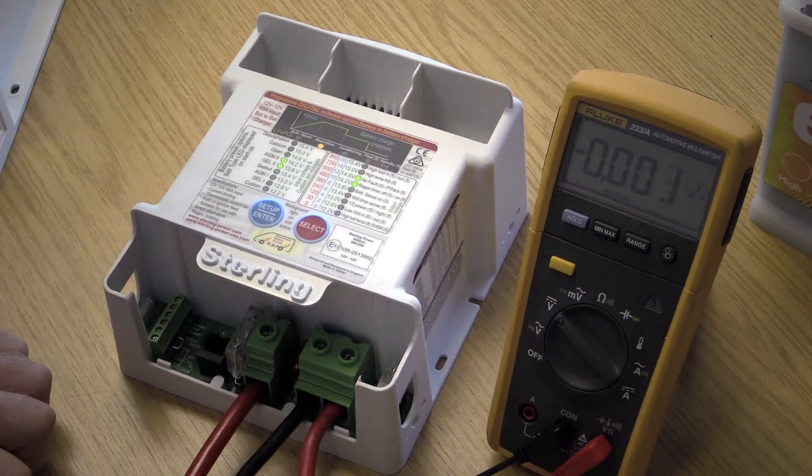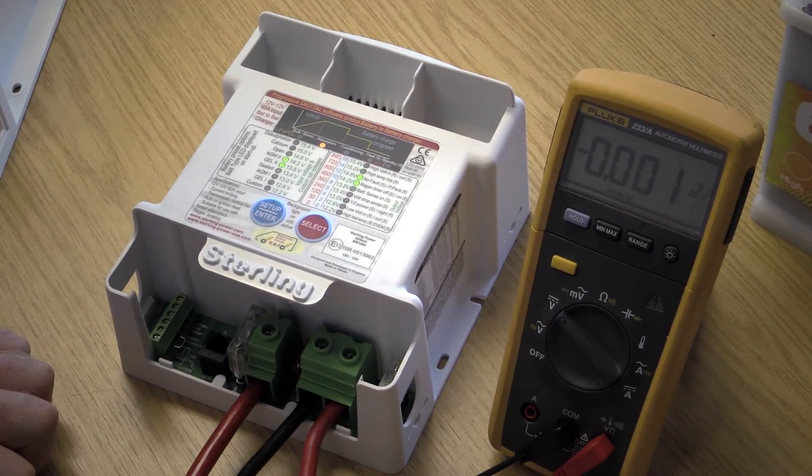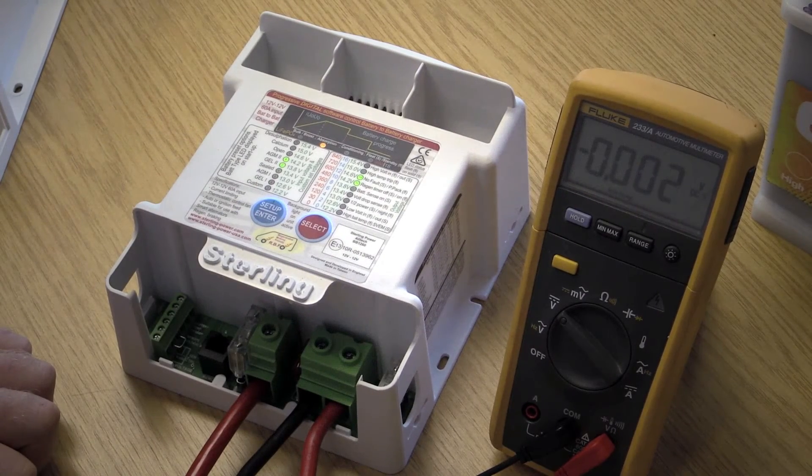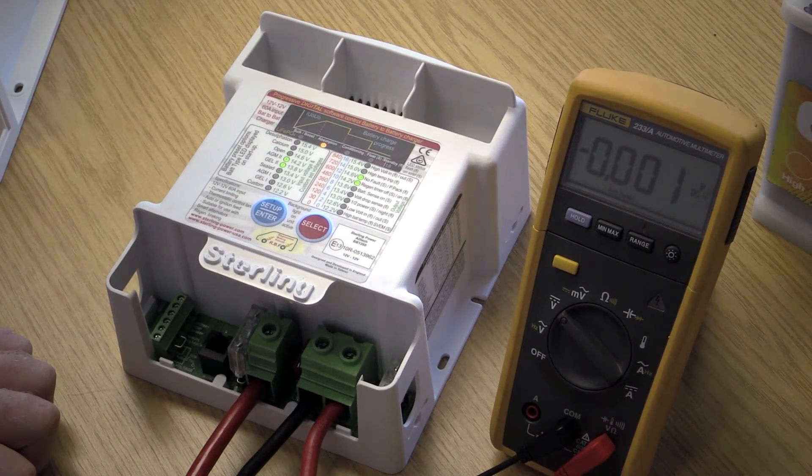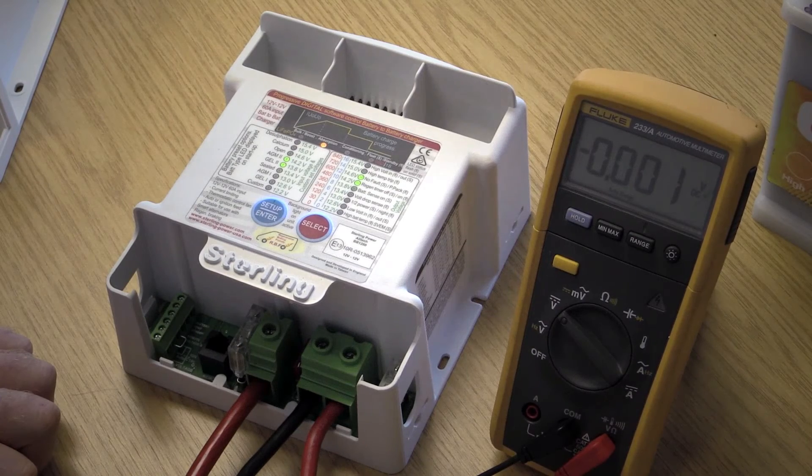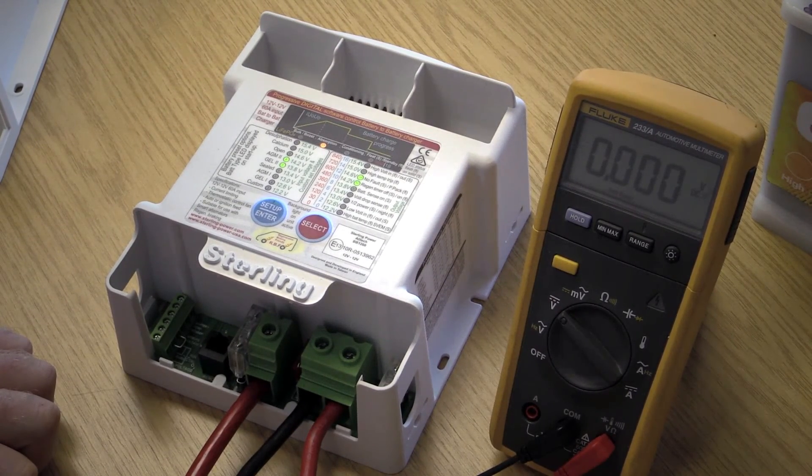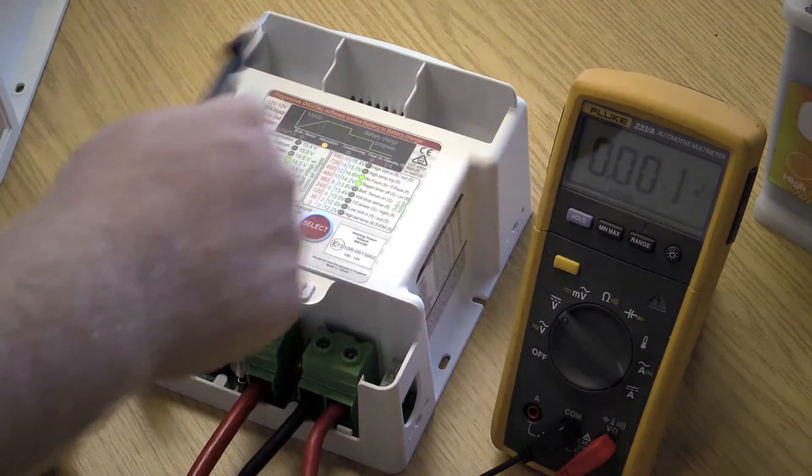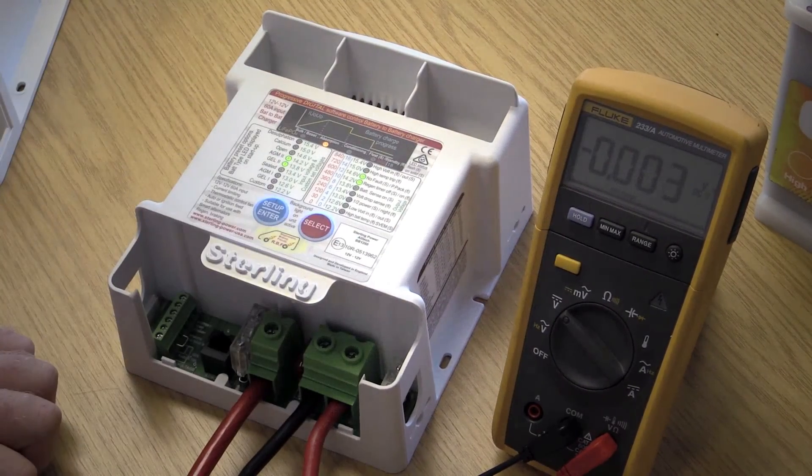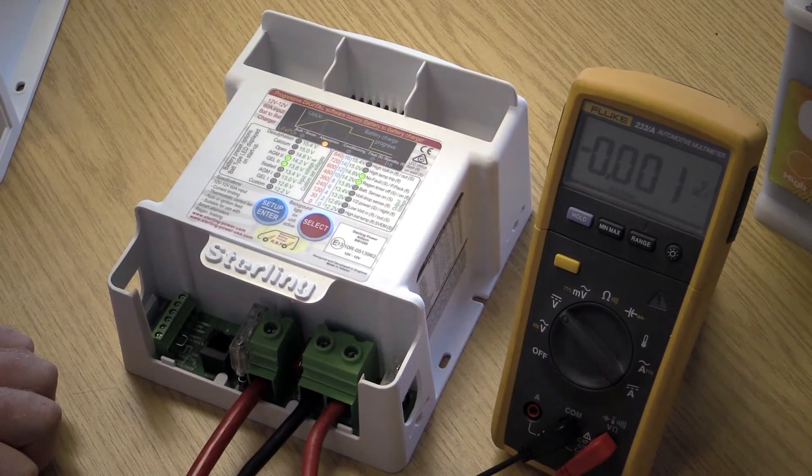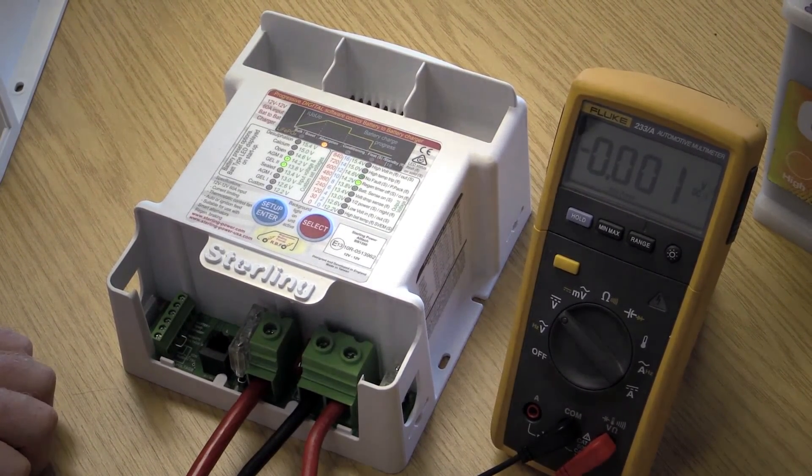And finally, don't forget, you can reset the battery to battery charger to default by holding down both buttons for over 30 seconds and then letting the buttons go and then pressing them and holding them again for a couple of seconds and that should confirm it. Lights will go in particular sequence to demonstrate something's happened. The unit will turn off and fire up again and it will be reset to default. Thank you.